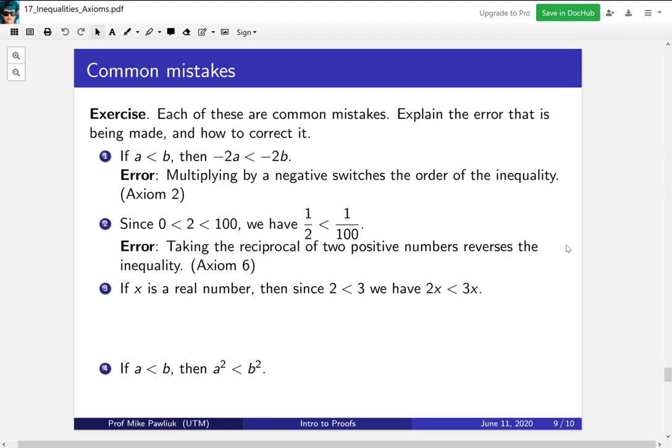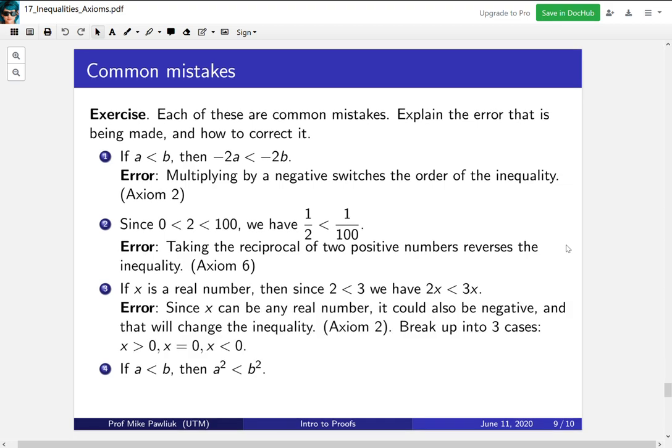What's happening in number three? Well, are you allowed to multiply a number through an inequality and have it stay the same? Only if it's positive. So the issue here is that since x can be any real number, it could sometimes be negative, and that would change the inequality. So if you ever have something like this show up in a proof or an argument you're doing, you should break it up into three cases where x is positive, x is zero, or x is negative.